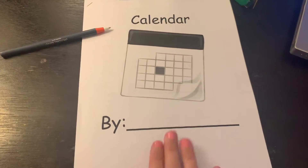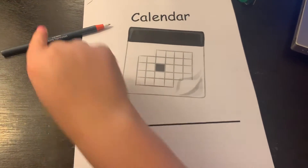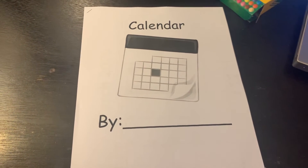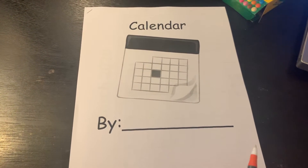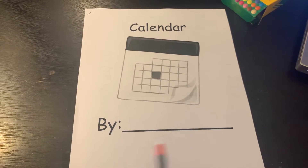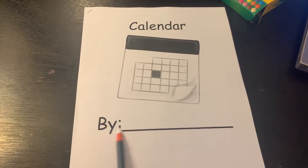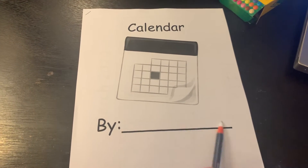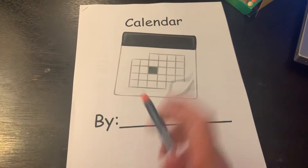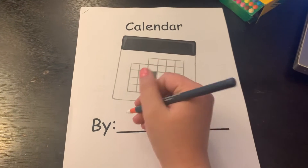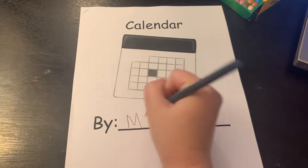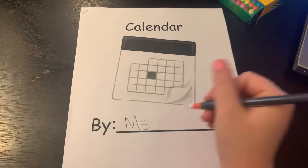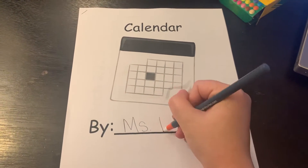Alright, so right now you're gonna need your calendar packet. Now that you have that, I need you to write your name right here where it says. So write your name. I'm gonna write my name — I'm gonna write Miss Marshall.